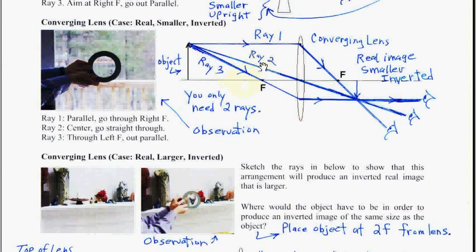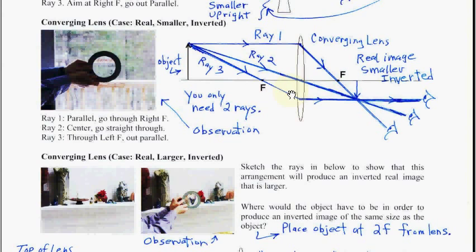Ray 3 is ray 1 backwards. Ray 1 backwards would be: instead of going parallel and through F, we go through F and then out parallel. Ray 3 is always ray 1 backwards. I put it in to show you that you could use it, but I recommend using two rays only since it's quicker.